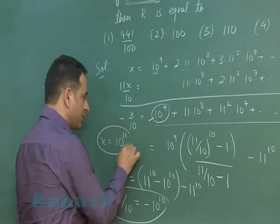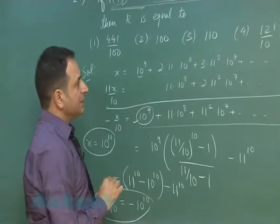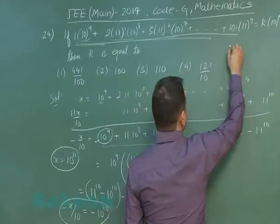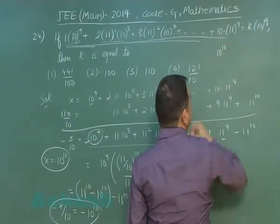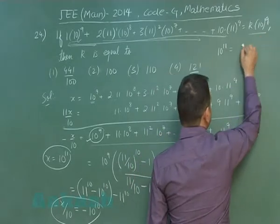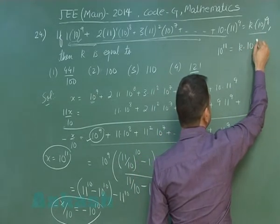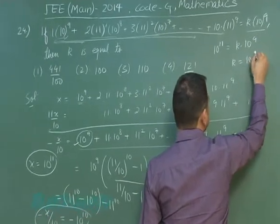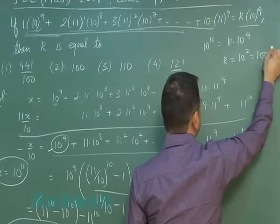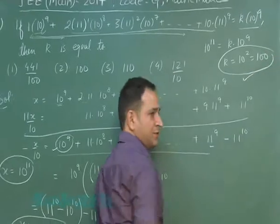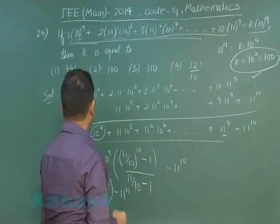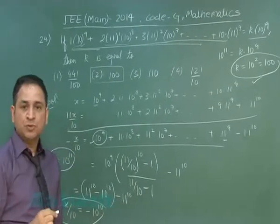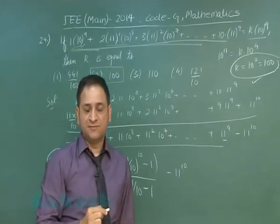From the simplification, X equals 10^11. Equating to k times 10^9, we get k equal to 10^2, that is 100. The correct option is option number 2.